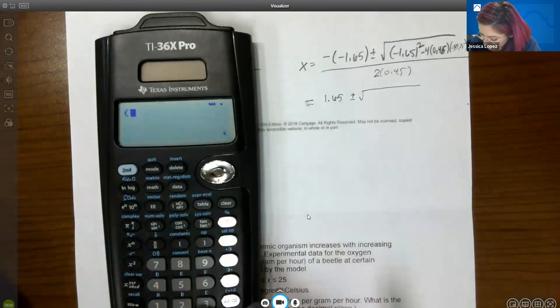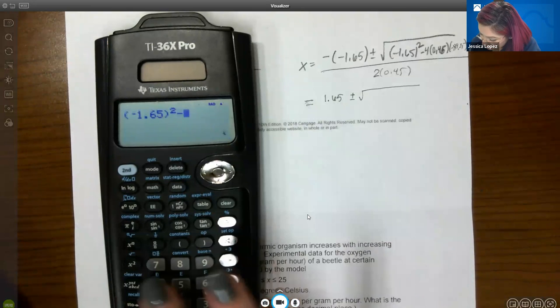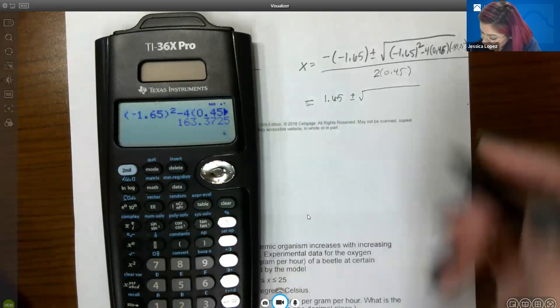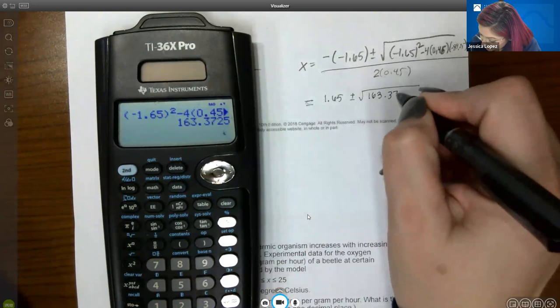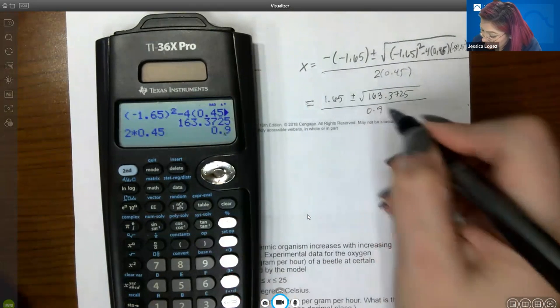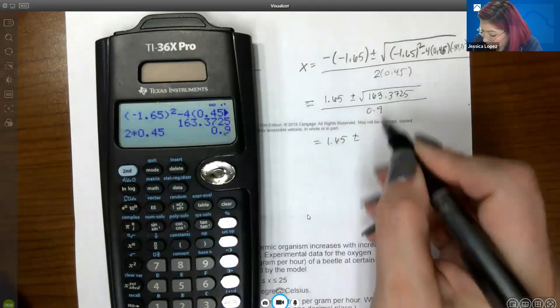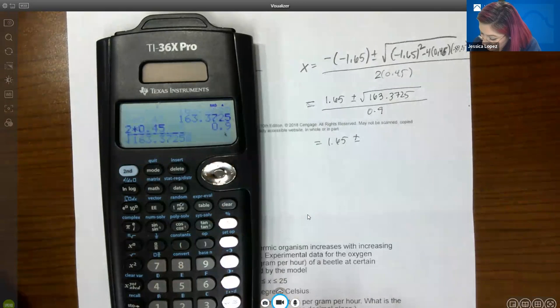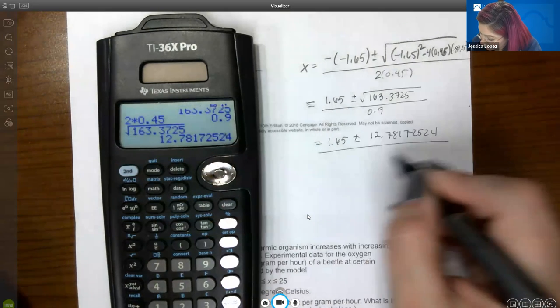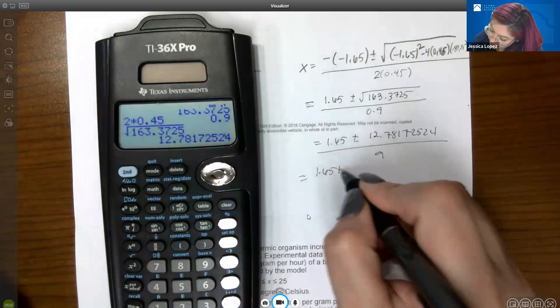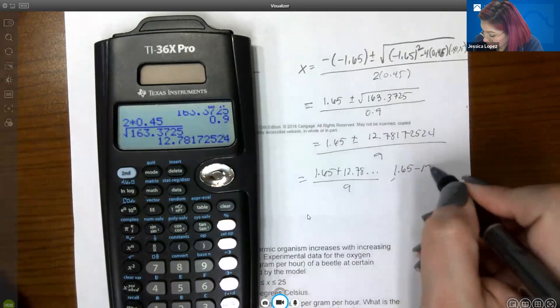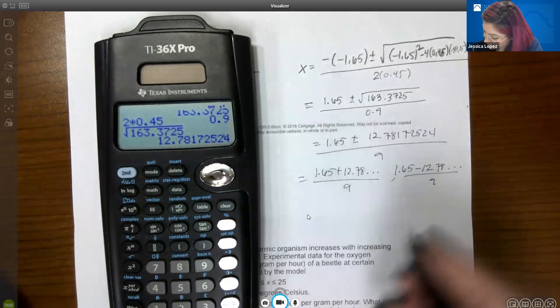and then I'm going to calculate what's under the radical. So clear. We're going to do parentheses, negative 1.65 squared minus 4 times A times C. And I get 163.3725. It is positive, so I do not have to worry about taking out any i's. But I am going to take the square root. So square root of this number is 12.78172524. So I am going to take 1.65 plus 12.78 over 0.9. And then 1.65 minus 12.78 over 0.9.